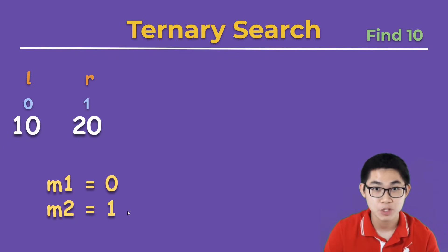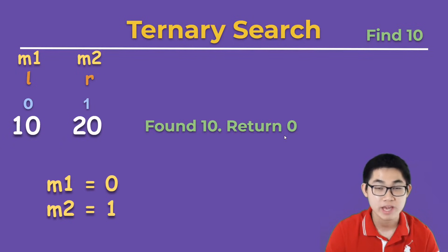We find m1 and m2, which are at 0 and 1. Here we found 10 at m1. So since we found 10, we can return true or return 0, which is the index of 10.